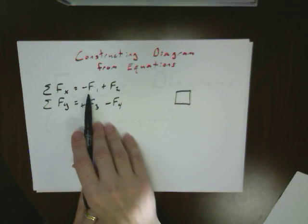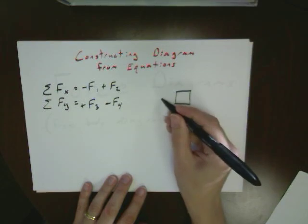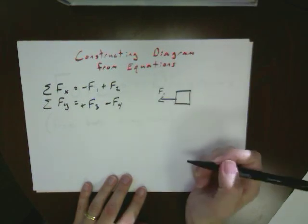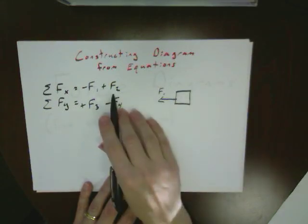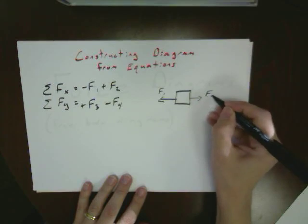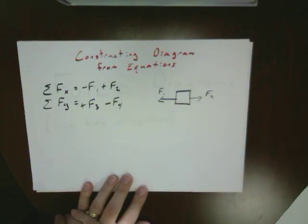From this equation, the first thing in the x equation is minus f1. So that means we would come over here and add our f1 in the negative direction. f2 is listed in the positive direction in x, so our f2 would be over here on this side.